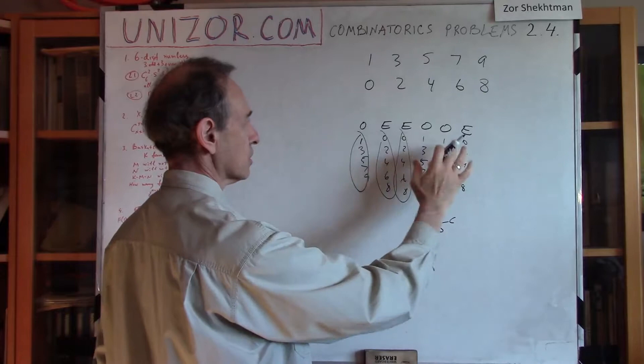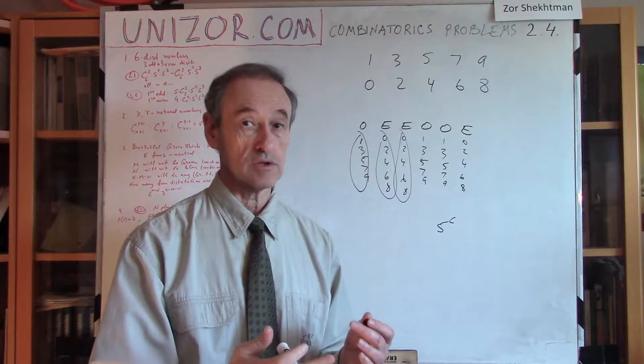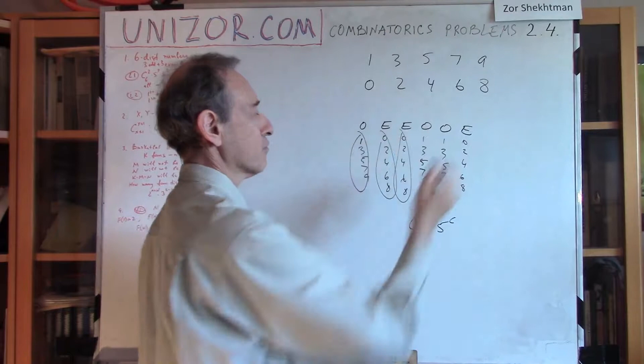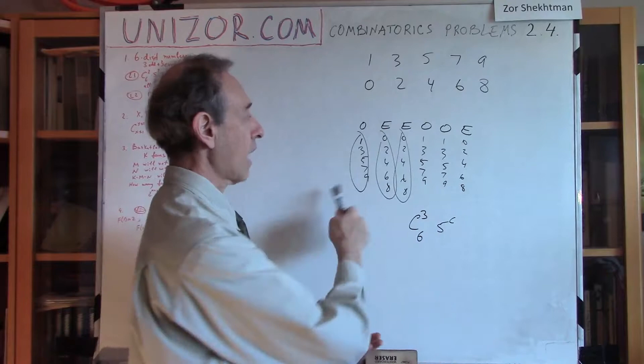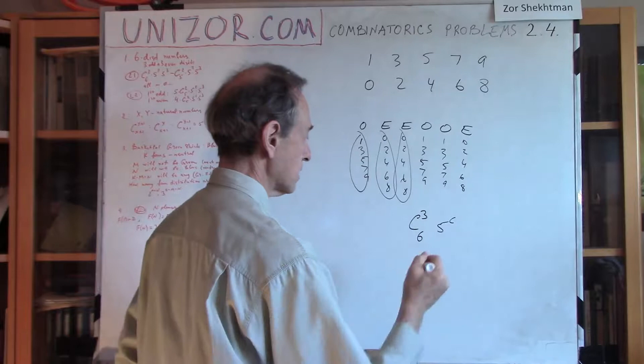That calculation assumes we've already distributed odd and even among the six positions. The number of different distributions is C(6,3) — we choose three places for, say, even digits, and the remaining three are automatically odd. So multiplying 5⁶ by C(6,3) gives the answer — but there's a very important detail to address.